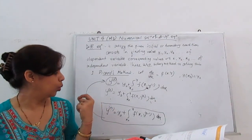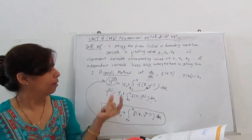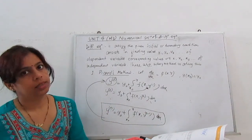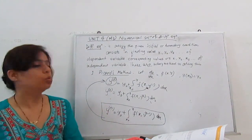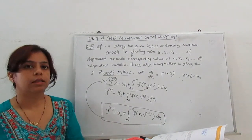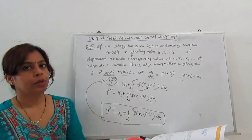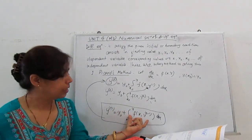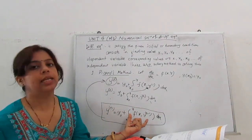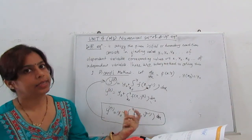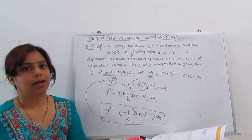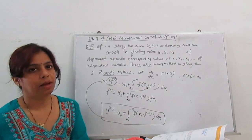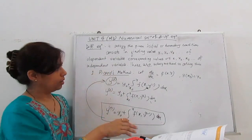This is called the Picard iteration formula — the general iteration formula. By substituting n = 1, 2, 3, 4 we get successive iterations. This method is only useful when the integral is easily integrable. If the function is not easily integrable, we must move to another numerical method.